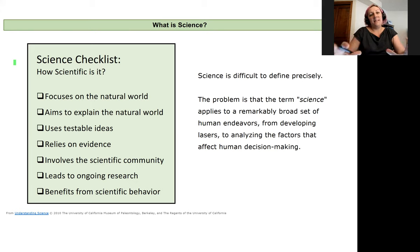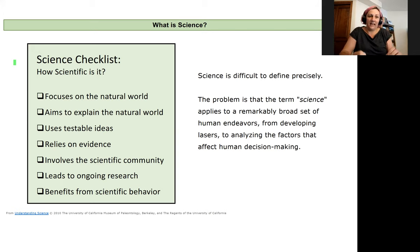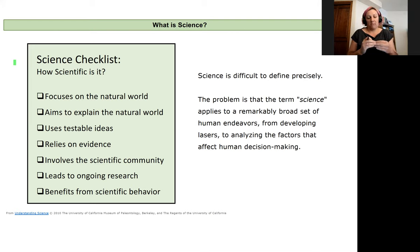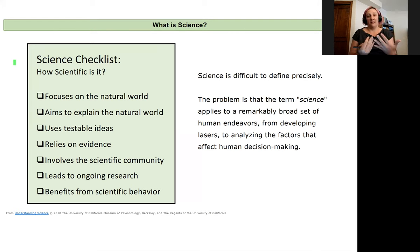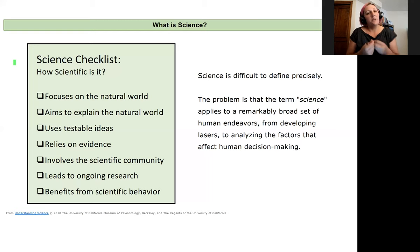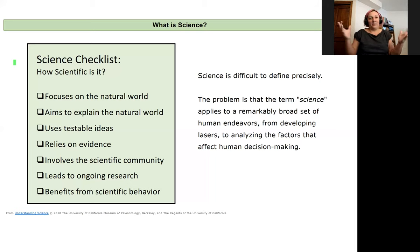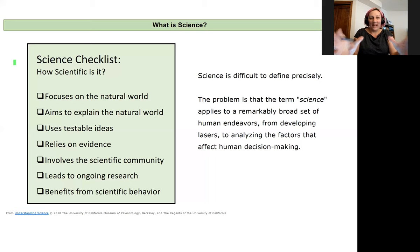It should aim to explain natural phenomena, and it'll need to use testable ideas — that's really the foundation of science for me. Then it relies on evidence; we don't make a claim without evidence to support it. Something is scientific only when it involves the scientific community. Science isn't done in isolation or in a bubble — it is a community effort, the human race moving forward with our understanding of the world together.